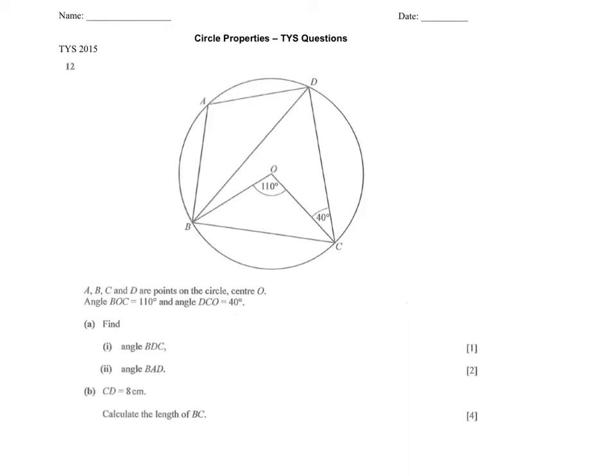I have the following circle and diagram given to me. The question says that A, B, C, D are points on the circle. Points on the circle form a cyclic quadrilateral. That means the angles in the opposite segment add up to 180 degrees.